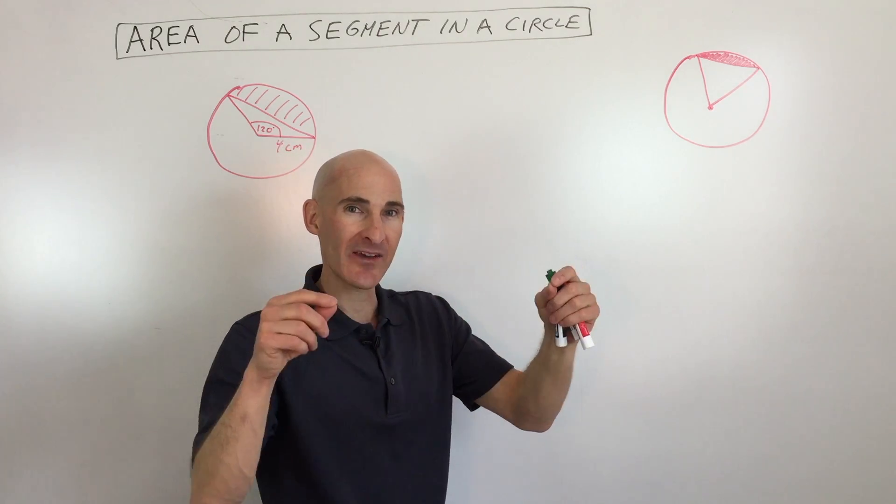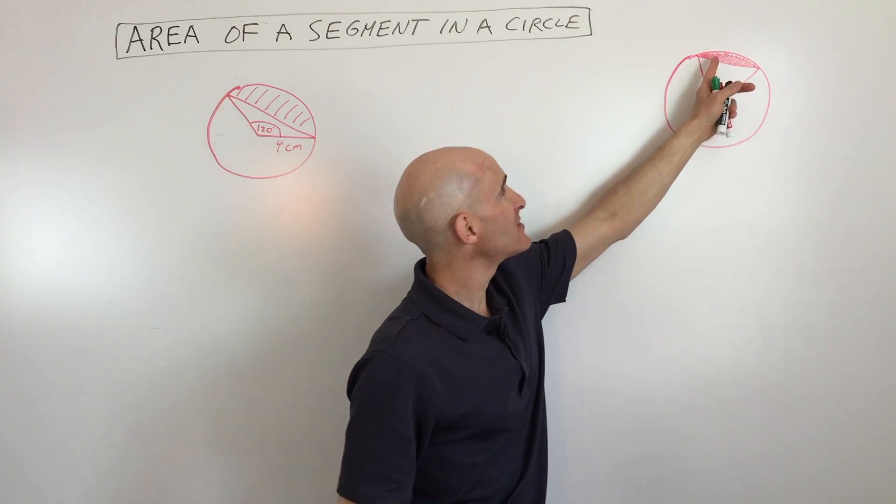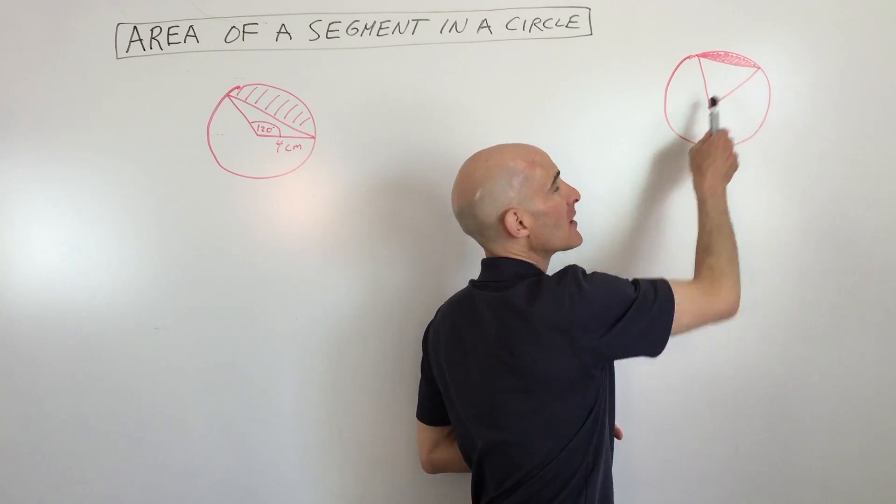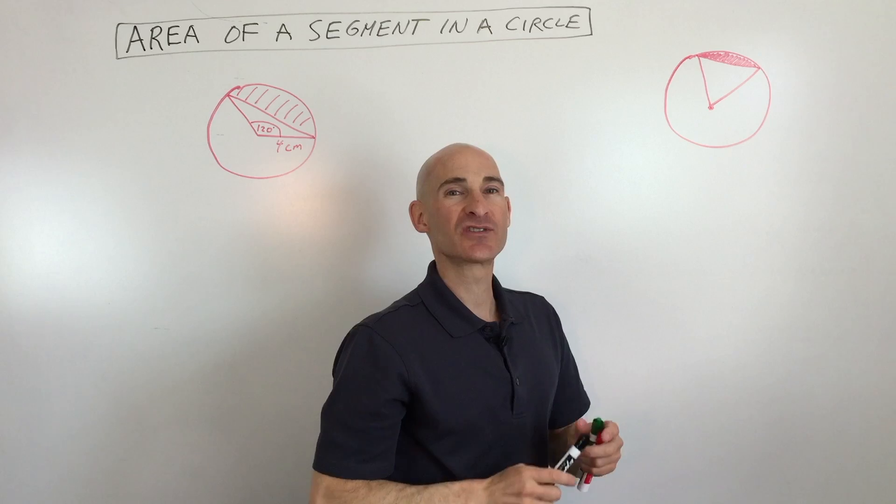We're talking about segments—not segment lengths, but this area right here. When you draw a sector, which is like a slice or section of a circle, like a pizza slice.